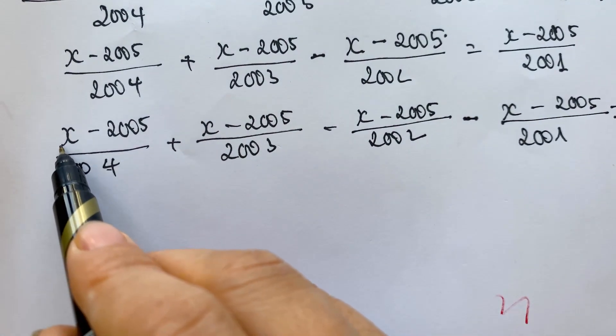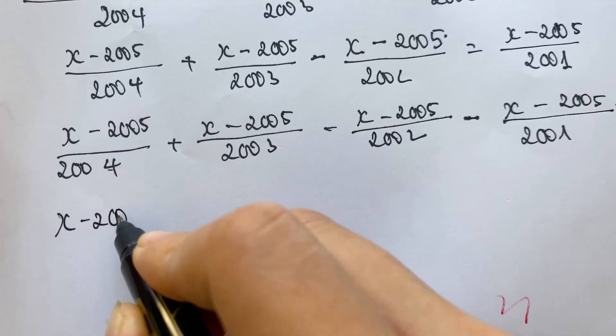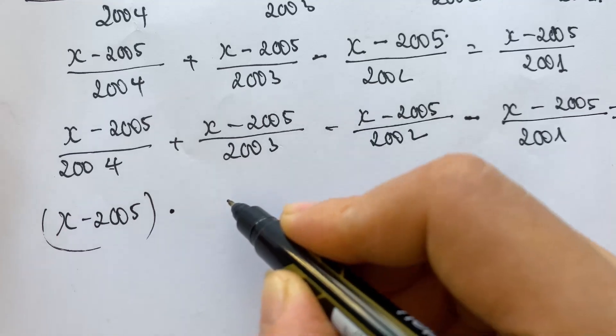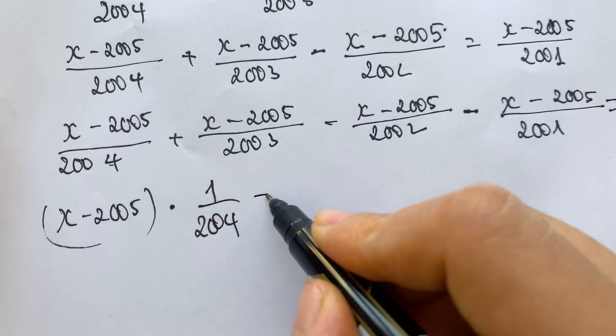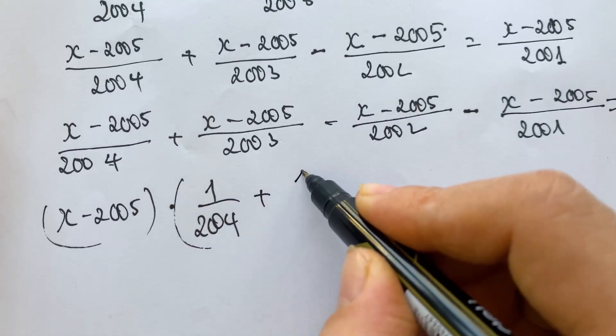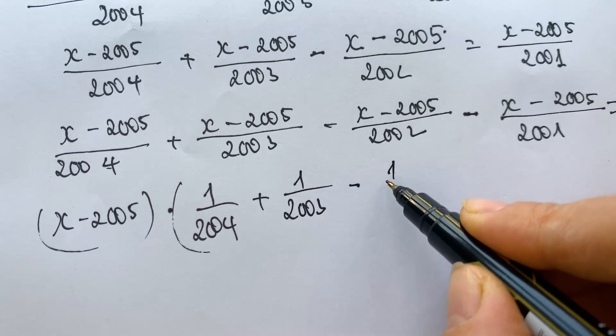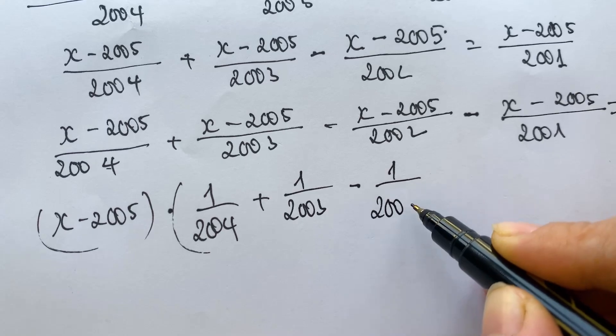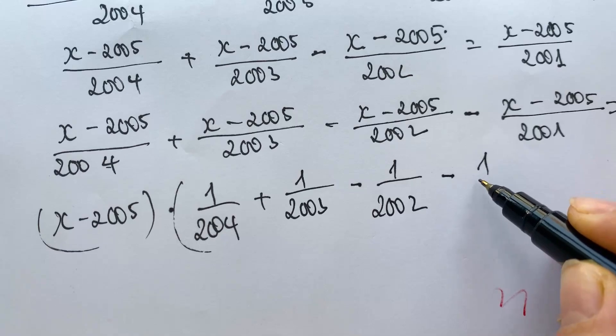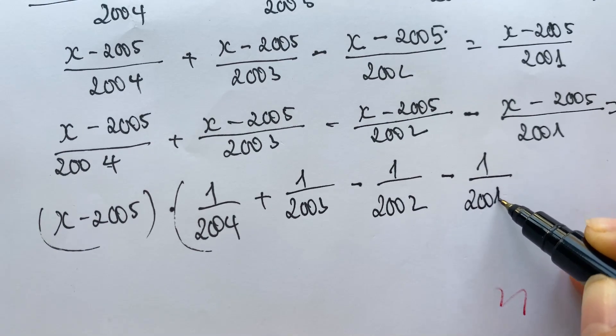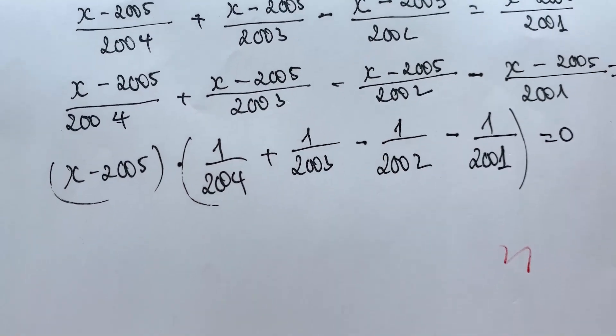So you look at that, it's a common factor. You need to factor it out, x minus 2005, yes? Times 1 over 2004, plus 1 over 2003, minus 1 over 2002, minus 1 over 2001, equals 0.